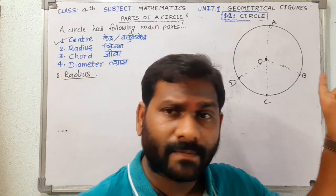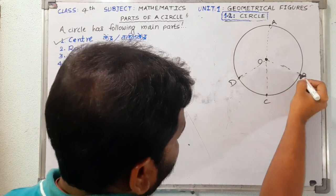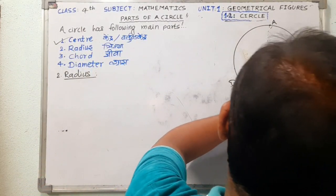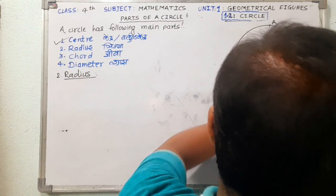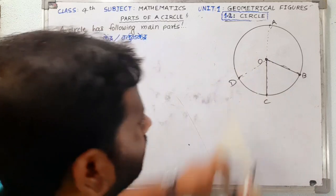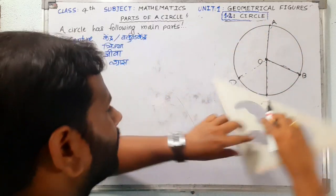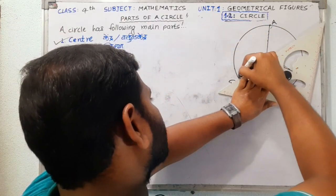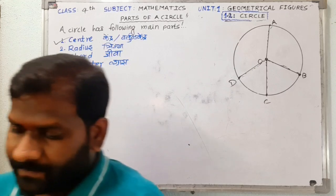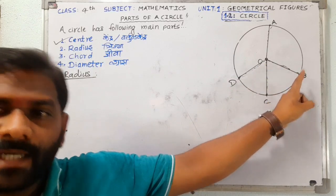Look here — this is point O. The point O, when connected to point B, makes a line, giving us the radius OB. When we extend this line from O up to point C, and connect point A with O and point D with O, we obtain different radius lines. Radius is the distance between the center of a circle and the curve of a circle.